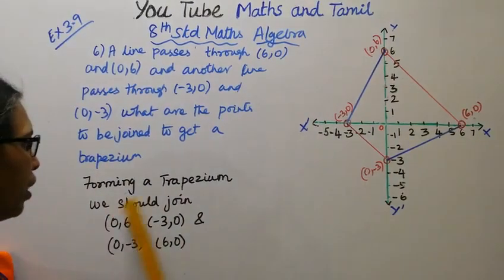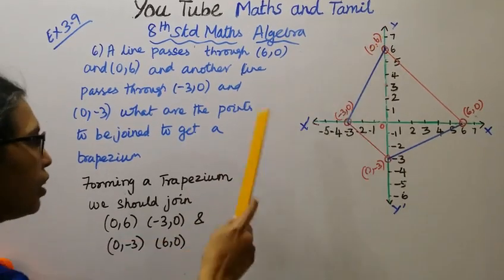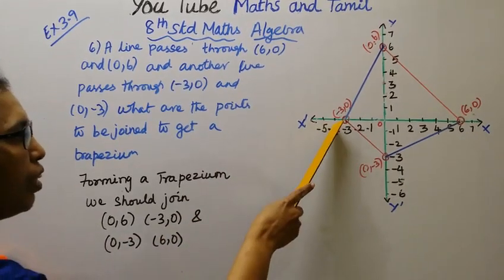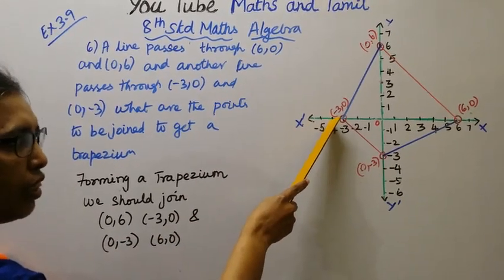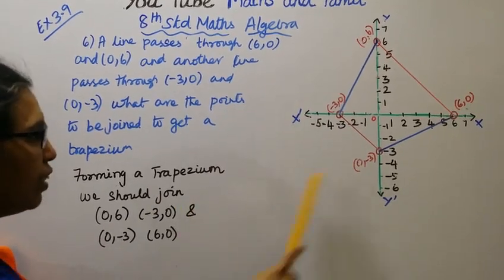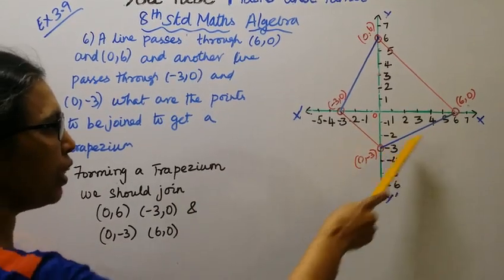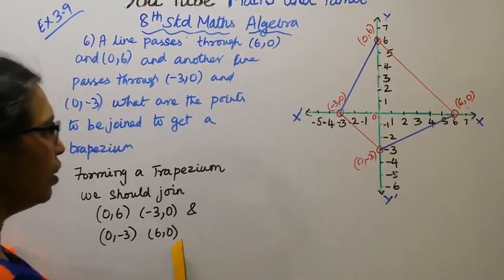We should join 0,6 and minus 3,0. And also 3, 6, 0 — these are the points to be joined.